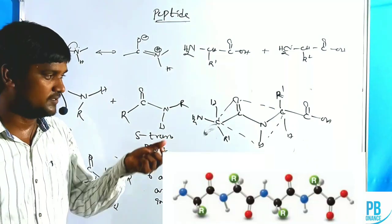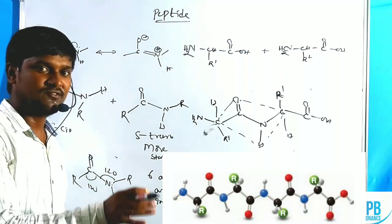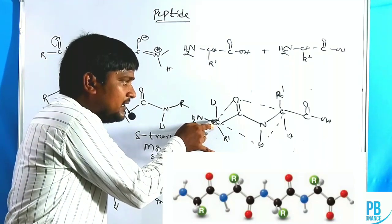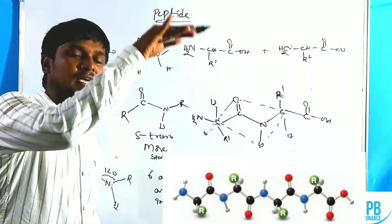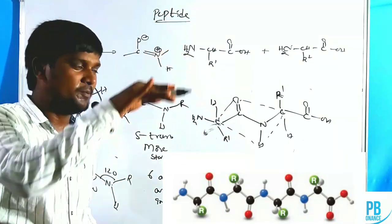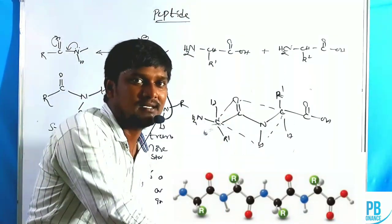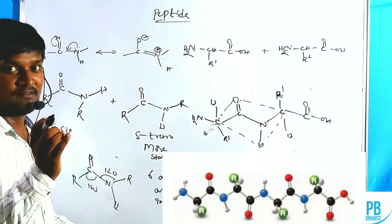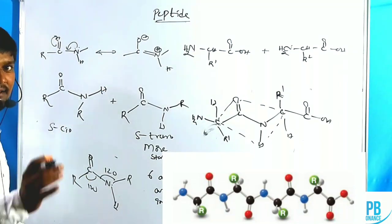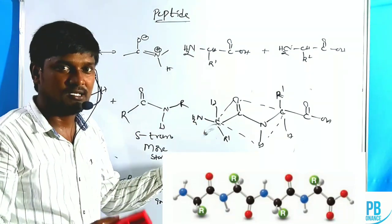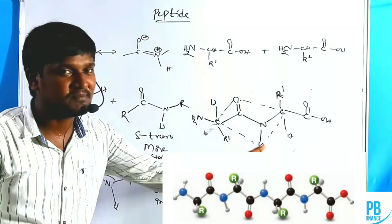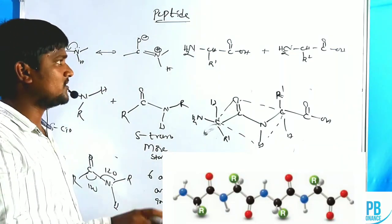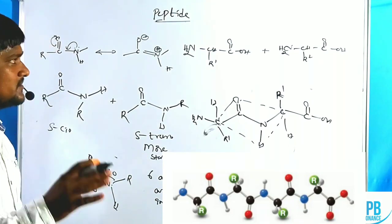This geometry indicates that all six atoms are in the same plane, while hydrogen groups may be above or below the plane and R groups have one above and one below. This is the geometry of the peptide linkage. I'll show the three-dimensional geometry of this peptide linkage below for a complete understanding.